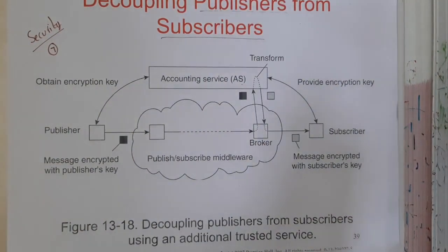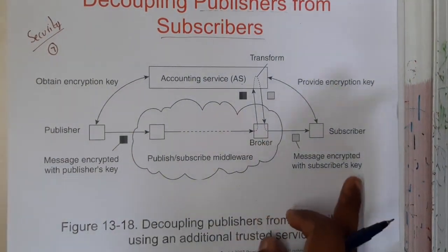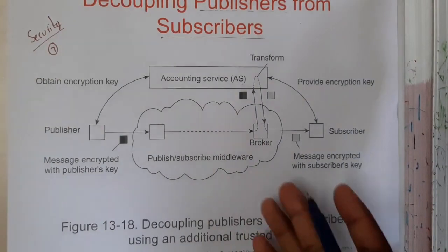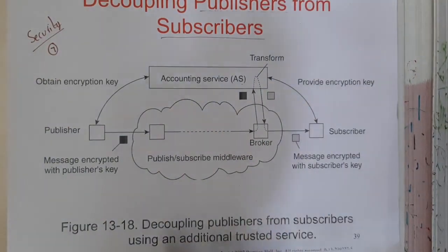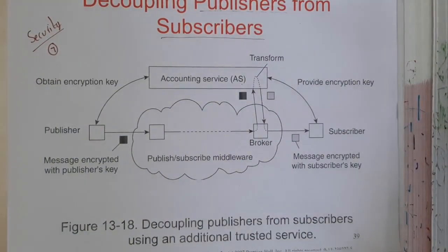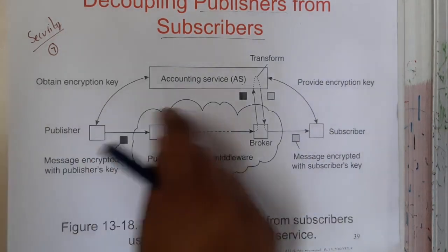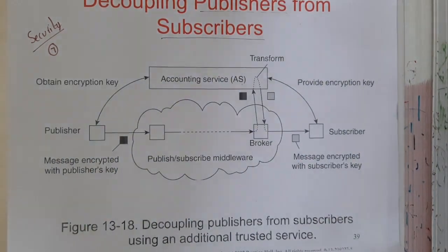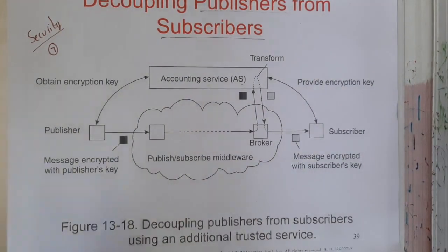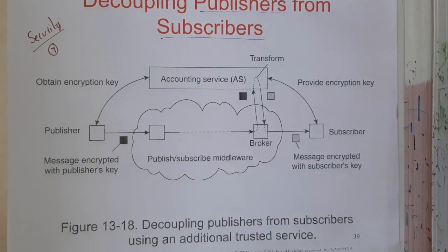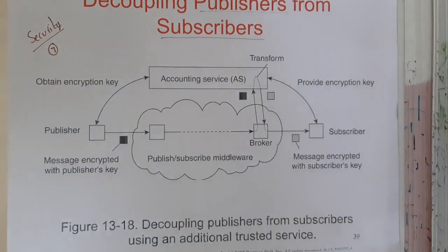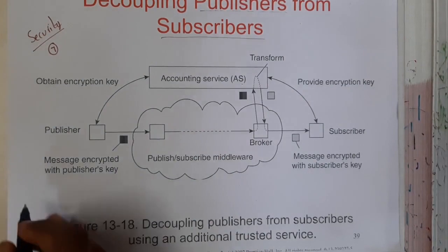Once that is done, the data will be received back by the broker, and the broker will encrypt the data with the subscriber's key. At the end it is delivered to the subscriber. The subscriber can then decrypt it with both keys and unlock the message. That is how the encryption works in this flow.